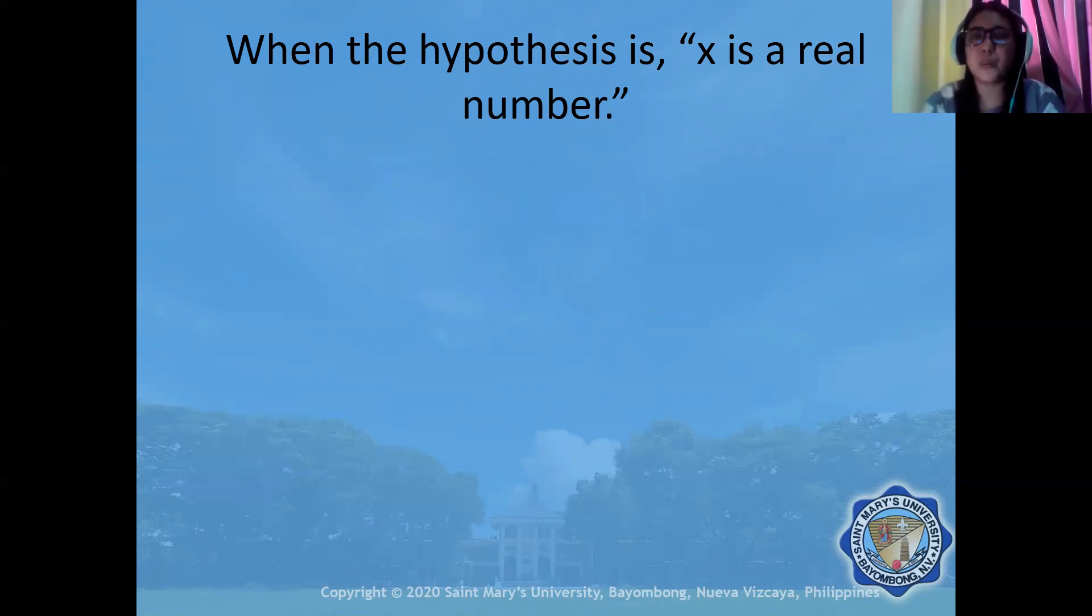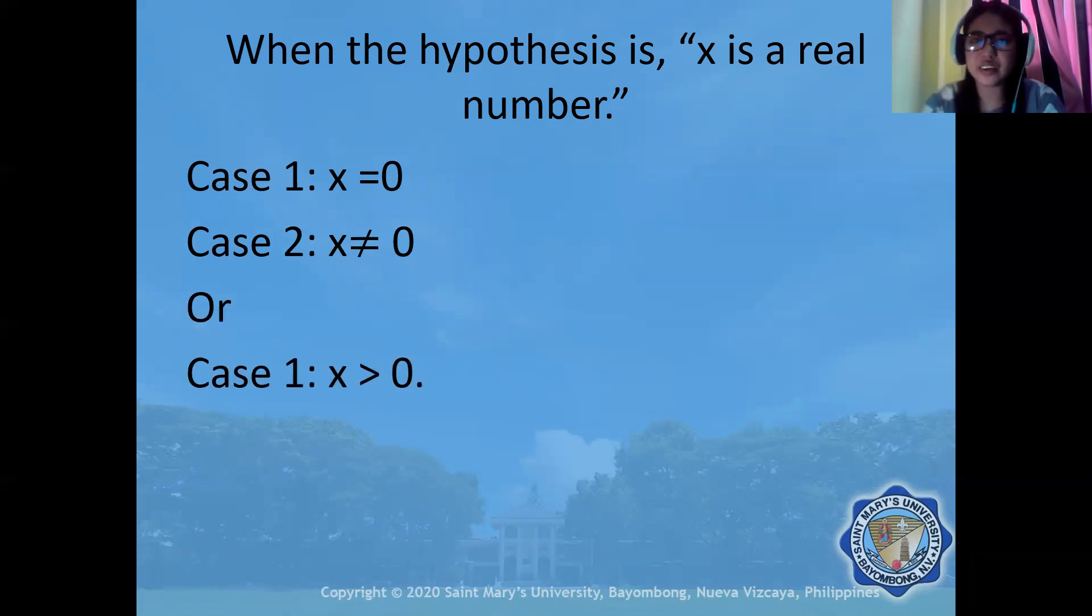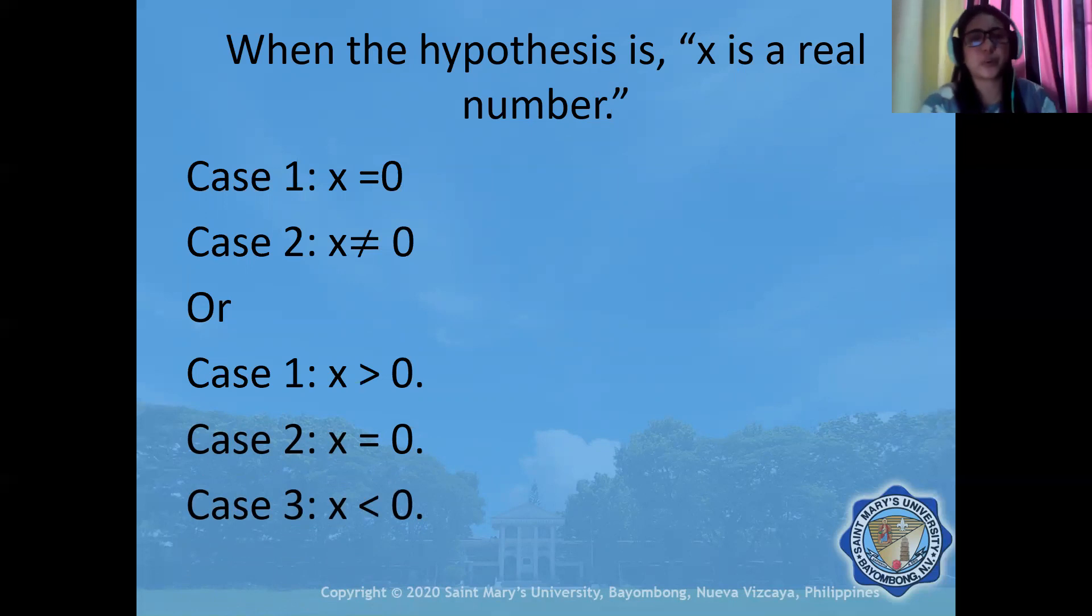When the hypothesis is x is a real number, we can say case one is x equals zero and case two is x not equal to zero. Or, case one is x greater than zero, case two is x equals zero, and case three is x less than zero. For case two where x is not equal to zero, you still need to show whether it is greater than zero or less than zero. So we have either two cases, but you need to show both possibilities in the nonzero case, or you can split it into three cases.